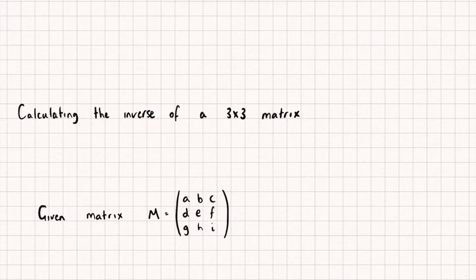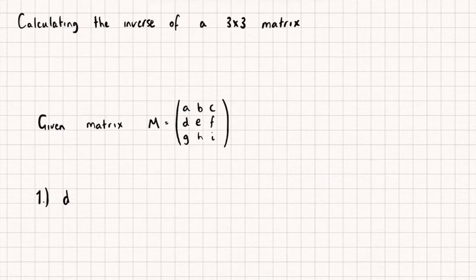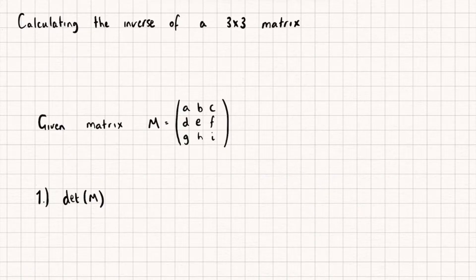Let's first start off with a generic matrix M. You can see here I have a matrix M which is 3x3. The first thing we're going to want to do when finding its inverse is find its determinant, for two reasons. One, we're going to use the determinant in our formula for the inverse. But also it's going to let us know if our matrix M is even going to have an inverse to find.